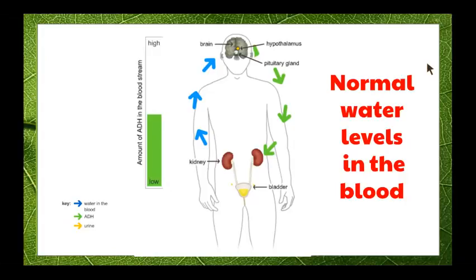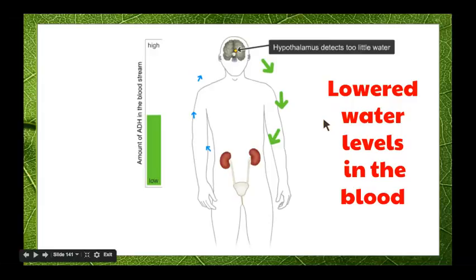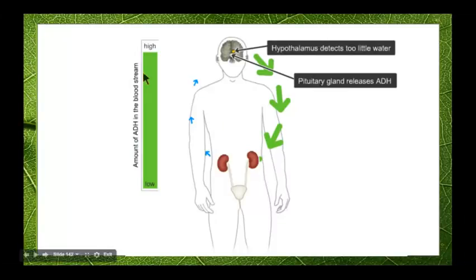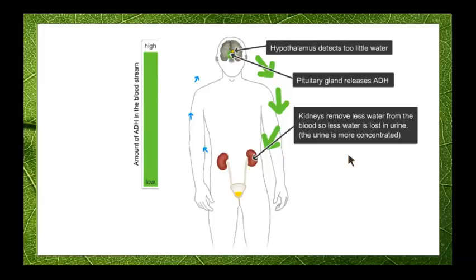This image shows normal water levels in the blood. The blue arrows show water, the green arrow shows ADH, and the yellow arrows show urine. With steady water levels, there's a steady amount of ADH and the kidneys produce an even amount of urine. However, if we have a decreased amount of water, the hypothalamus detects this and releases more ADH. ADH acts on the tubules so less water is removed from the blood, the urine becomes more concentrated, and we produce small amounts of dark yellow urine — this is what happens when we're dehydrated.